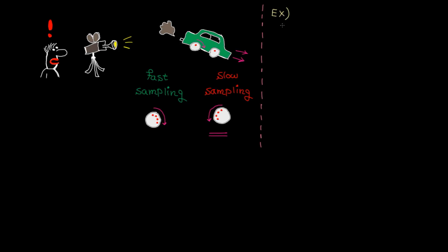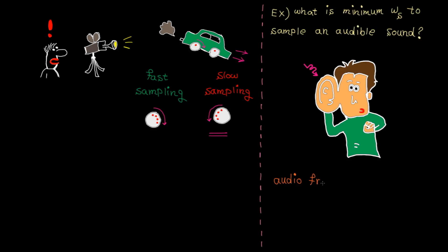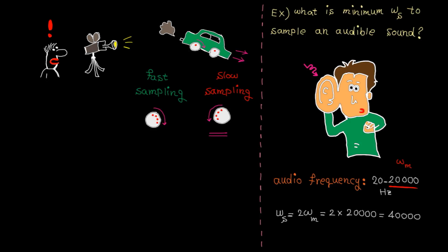Let's solve some examples. First: what is the minimum sampling rate to sample an audible sound? Human beings can typically hear sound between 20 and 20,000 Hz, so the maximum frequency is 20,000 Hz. To avoid aliasing, the sampling rate must be at least 2·ωₘₐₓ = 40,000 Hz. This is why common file formats like MP3 or WAV use around 44,000 Hz as the sampling rate — slightly higher than 2·ωₘₐₓ to be safe.